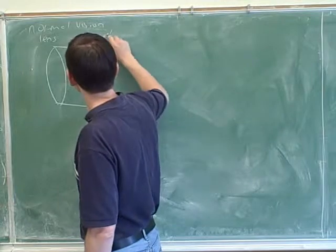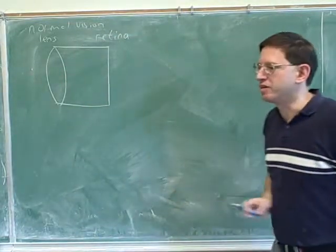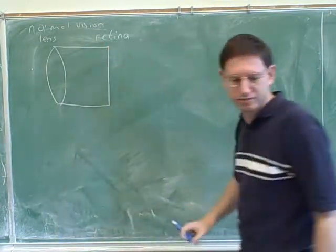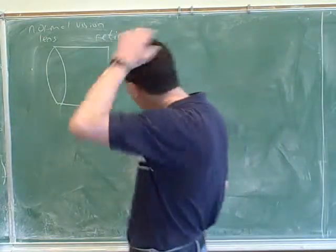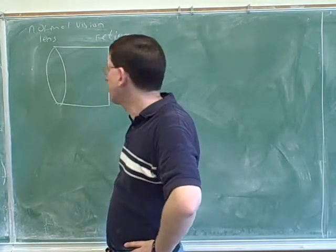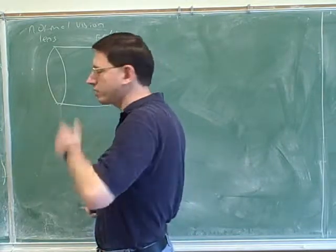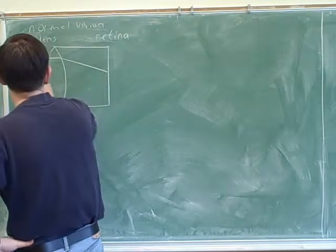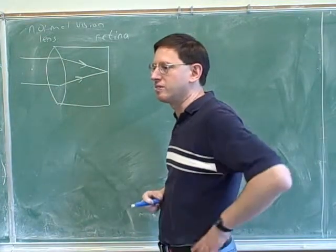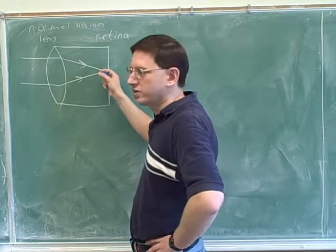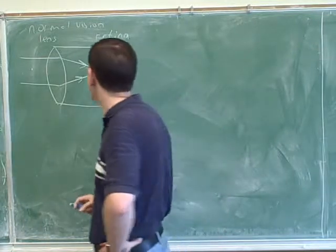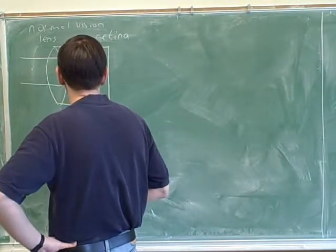The back of the eye is called the retina. This is where the light-sensing equipment is — where the nerves are that sense the light. When the eye is working properly, we want the image to form on the retina. The image is where the outgoing light rays converge, so we want the outgoing light rays to converge on the retina. This indicates a clear, focused image.